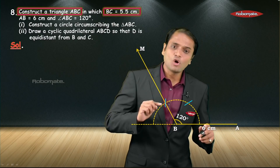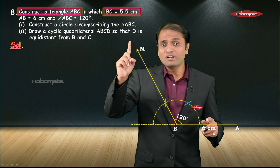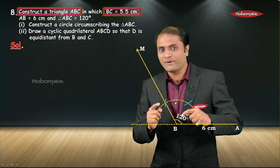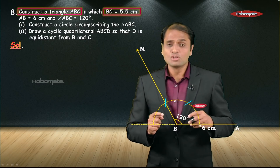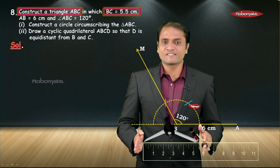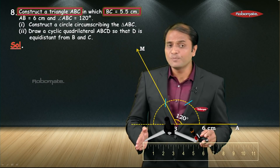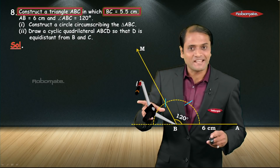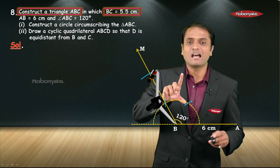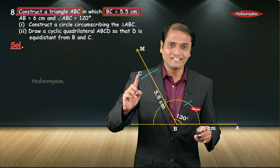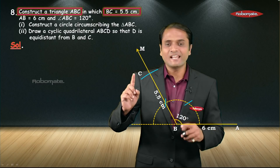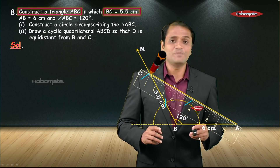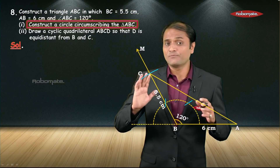Now I need point C on ray BM. BC = 5.5 centimeter, so point C is 5.5 centimeter from point B. Fix radius 5.5 centimeter on the compass, take the compass to point B, and with B as center and radius 5.5 centimeter, cut an arc to get point C. Now join A with C and triangle ABC is ready. The first part is done.